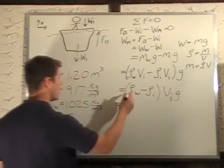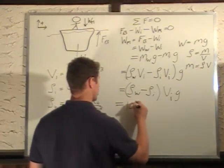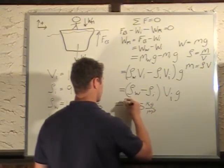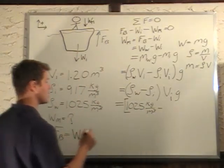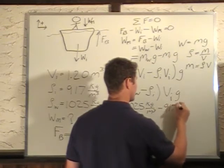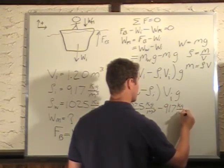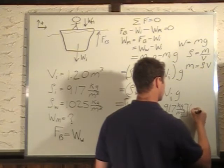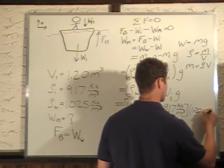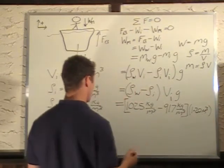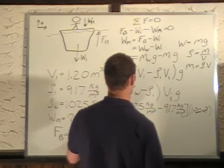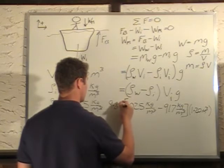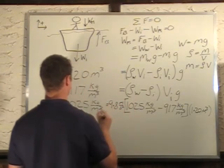So I plug in my values. Rho for water is 1025 kilograms per cubic meter minus rho of my ice is 917 kilograms per cubic meter. That's multiplied by the volume of 1.2 cubic meters and also multiplied by G. I'm just going to put G over here since I ran out of room, 9.8 meters per second squared.